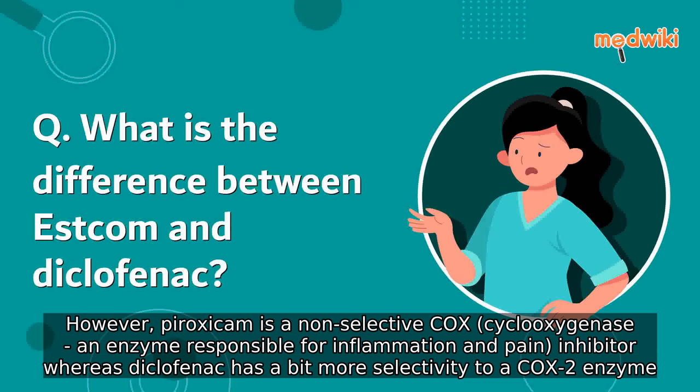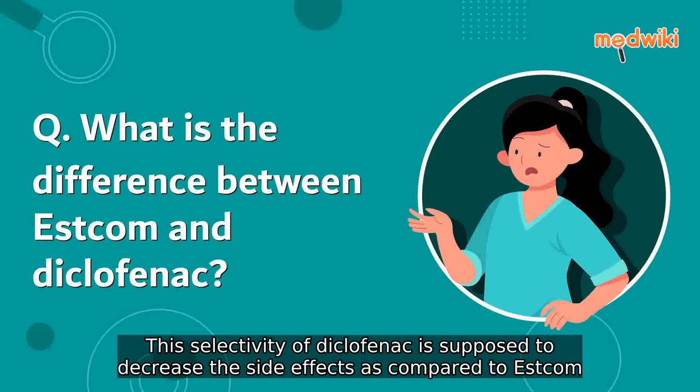Peroxycam is a non-selective COX (cyclooxygenase) inhibitor — an enzyme responsible for inflammation and pain — whereas Diclofenac has a bit more selectivity to the COX-2 enzyme. This selectivity of Diclofenac is supposed to decrease the side effects as compared to Estcom.